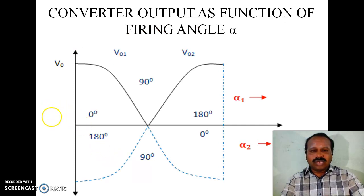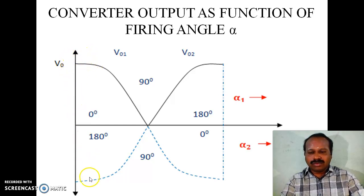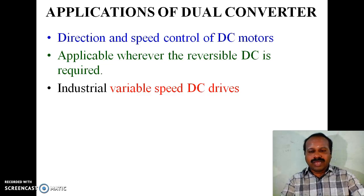This diagram shows converter output as a function of firing angle alpha. For alpha 1 = 0°, V01 is positive and the P converter works as a rectifier. For alpha 2 = 180°, V02 is negative. Applications of dual converter include directional and speed control of DC motors, wherever reversible DC is required, and industrial variable speed DC drives. Thank you.